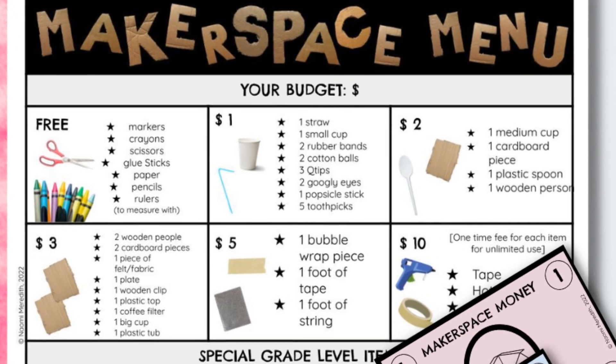Edit your makerspace menu based on the materials you have and want students to use. For certain projects, some kids might have specialty items — for example, first graders needed glow sticks to show their bioluminescent animals. On your menu, you can have all regular items that all kids can shop from, and at the bottom a section for specialty items that only certain grade levels can buy. Specialty items I keep in a separate bin that I pull out rather than placing them in the regular makerspace.